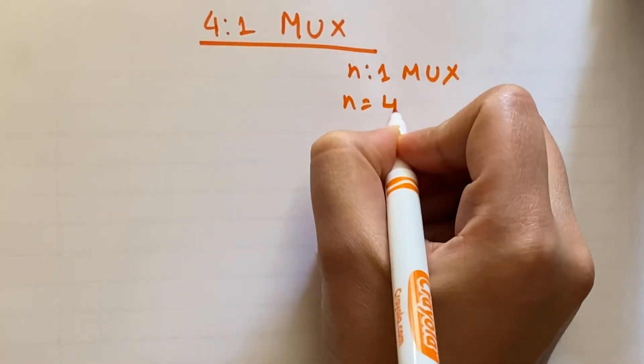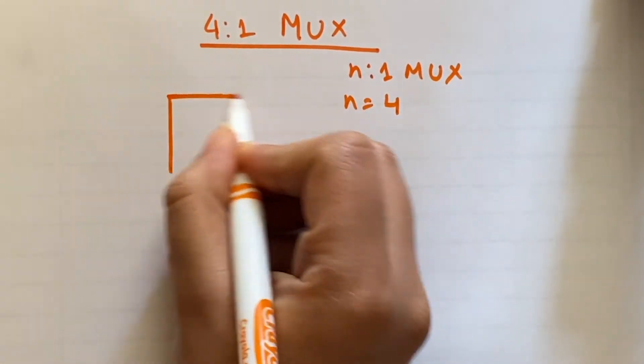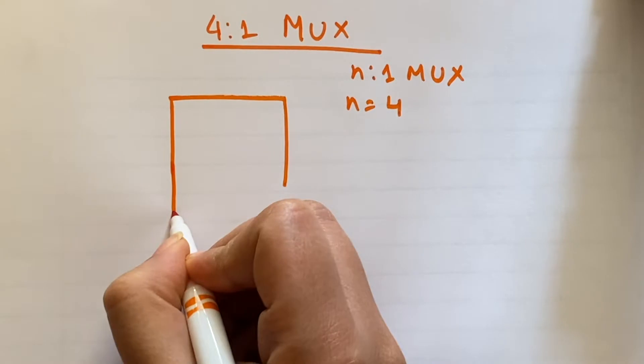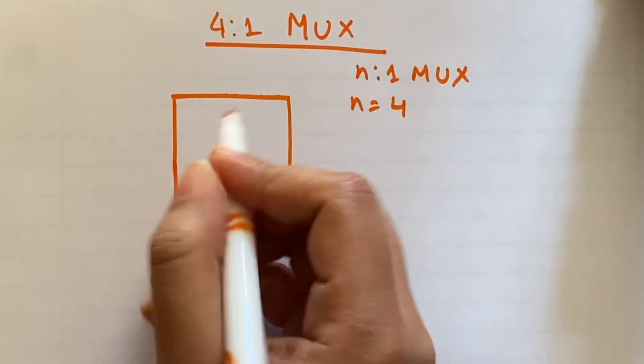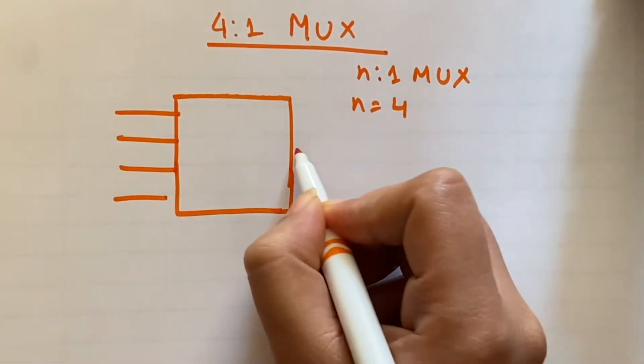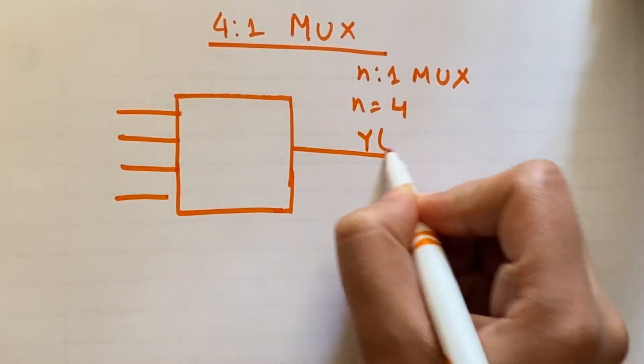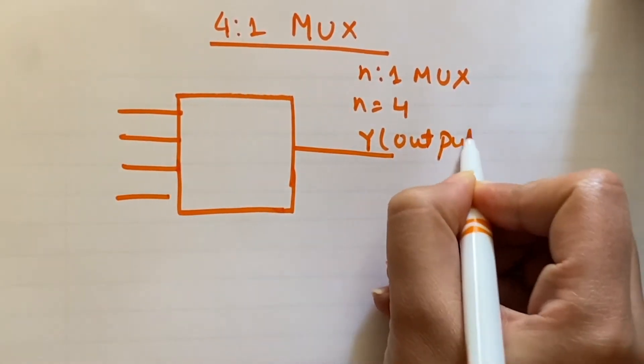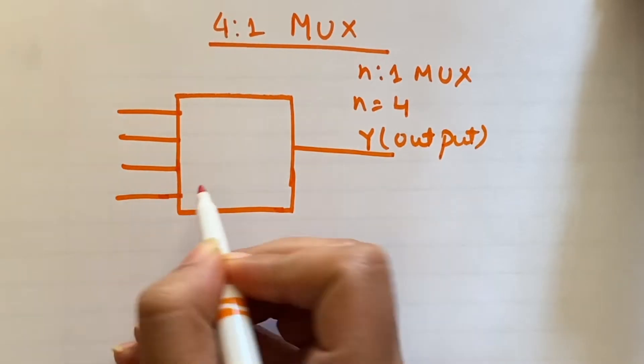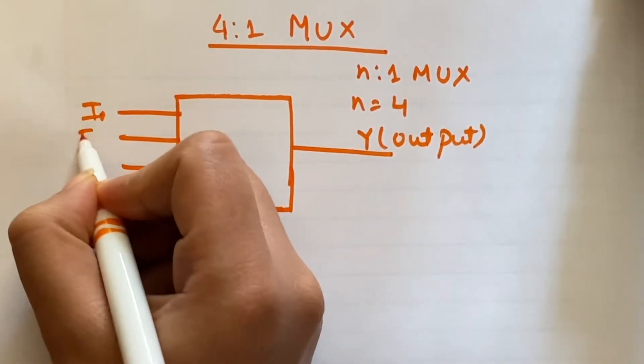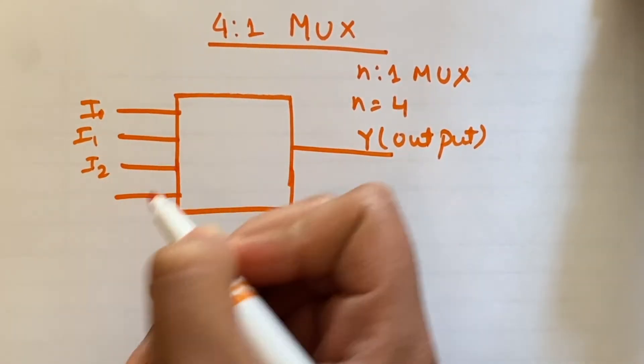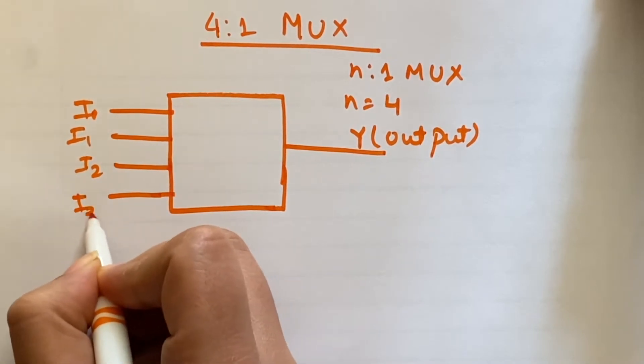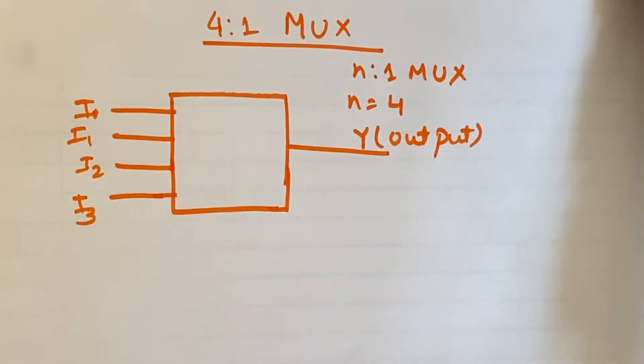Here n equal to 4, so the block diagram for 4 is to 1 MUX will be like this: 4 input lines and 1 output. Lines i0, i1, i2 till i minus 1, that is i3. n minus 1 is 3.